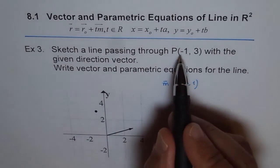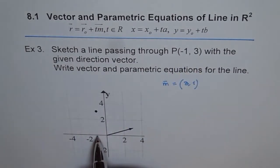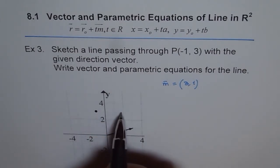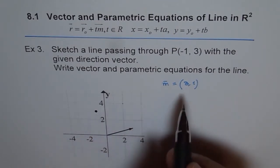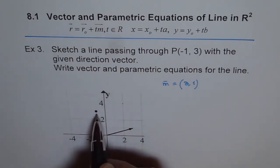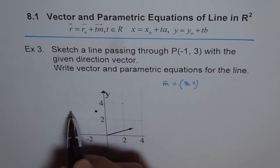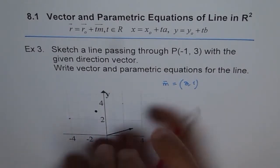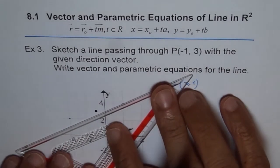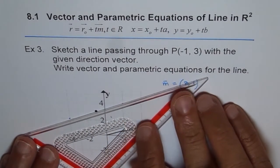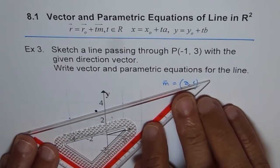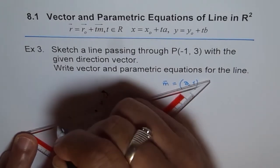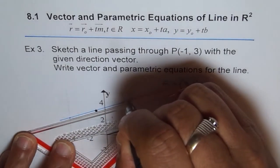So what we will do is we'll go to the point (-1, 3), which is -1, 1, 2, 3. And then from here we go 1, 2, 3 and 1. So that's one point, and we can go like this in the negative direction also, right? So 1, 2, 3 and 1. Correct. So this becomes the line, and we can always join this line passing through the point given to us.